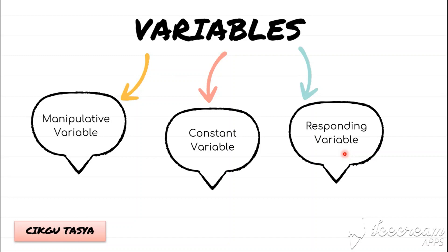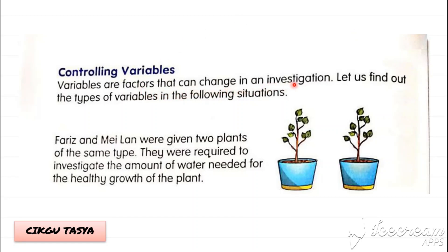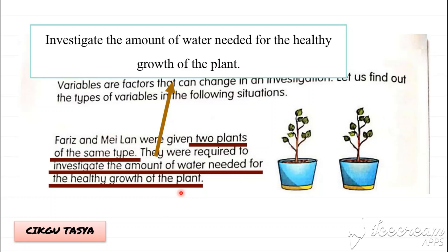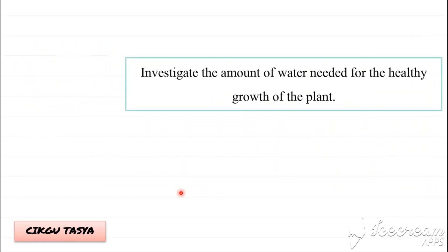Today we will be looking at the Science Year 3 Textbook DLP at page 12 and also page 13. So let's look at Controlling Variables — Variables are factors that can change in an investigation. Let us find out the types of variables in the following situation. Faris and Maylan were given two plants of the same type, and they were required to investigate the amount of water needed for the healthy growth of the plant.